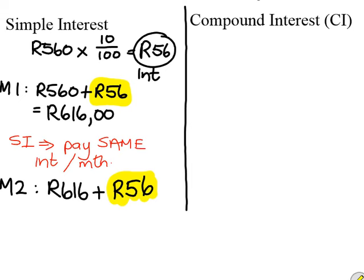All I am going to do here — if I add those two together, I get 672 Rand. So if she doesn't pay her account for two months, then she has to pay 672 Rand.